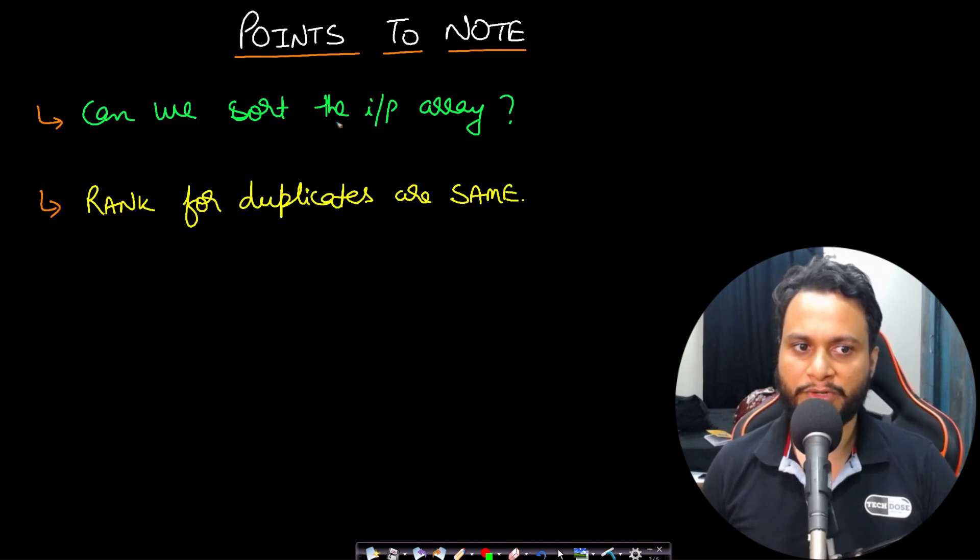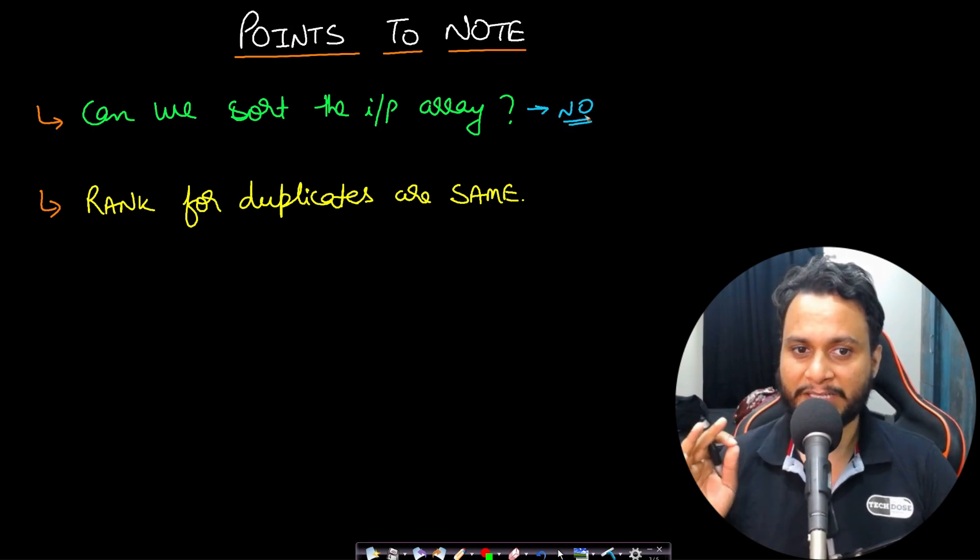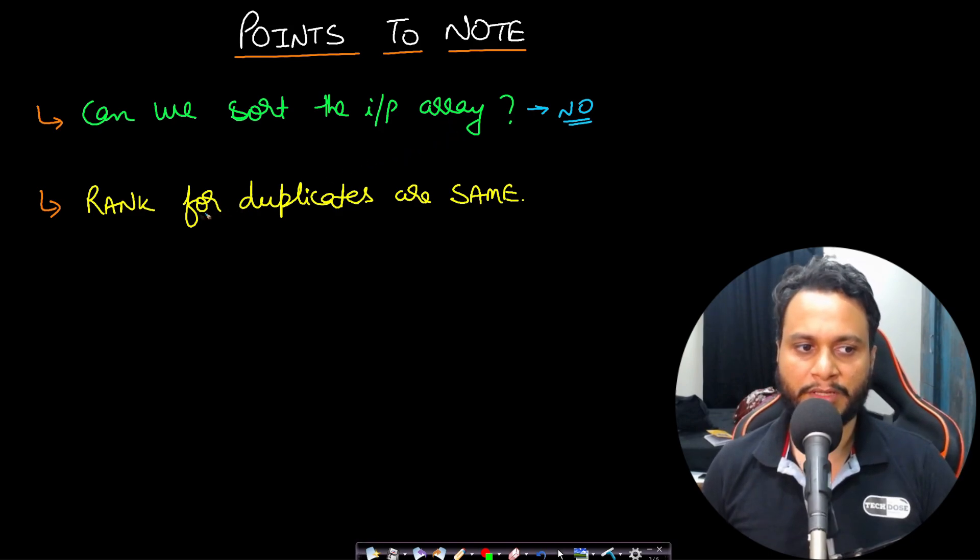The first point is can we sort the input array and the answer should be no because the ordering, that means the index will change. So if you can preserve the index then yes, otherwise you don't. Now rank for the duplicates are same. So if two items have the same numbers, then they should get the same rank.